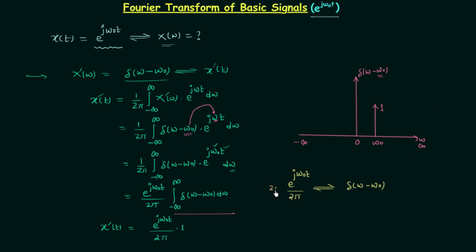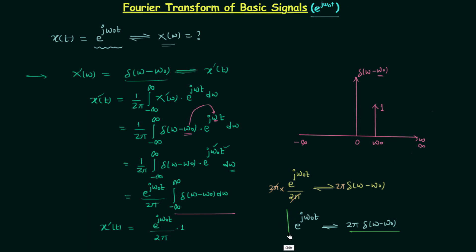We multiply 2π to the time domain signal, so the 2π terms cancel and we obtain the time domain signal e^(jω₀t). By the linearity property, multiplying 2π to the time domain signal also multiplies 2π to its Fourier transform. Therefore, the Fourier transform of the complex exponential signal e^(jω₀t) is 2π · δ(ω − ω₀).